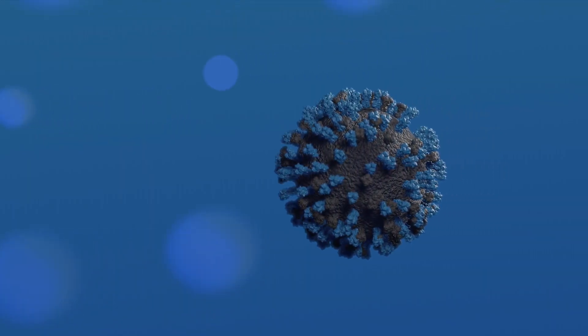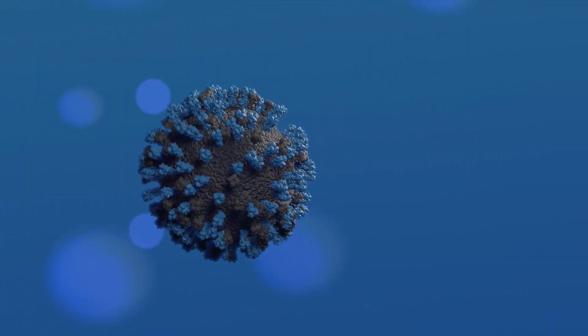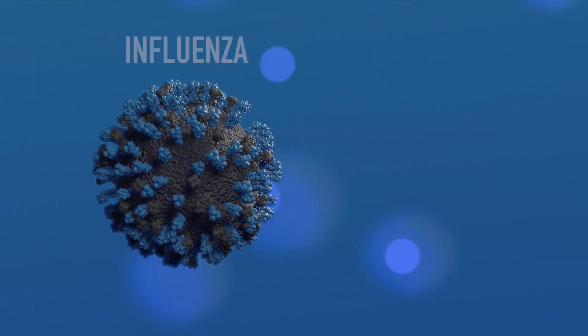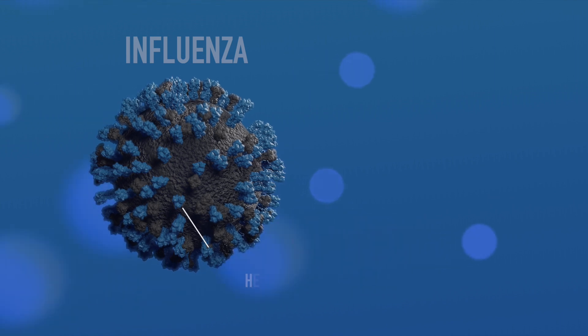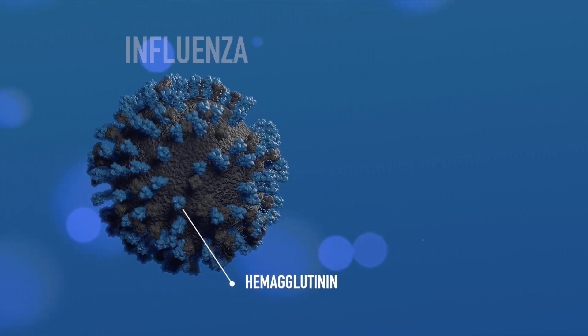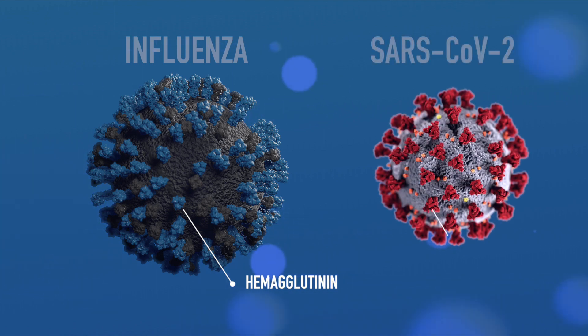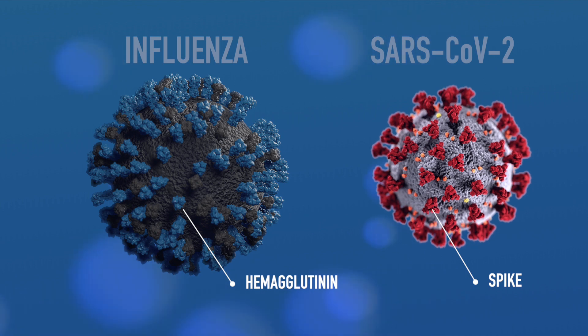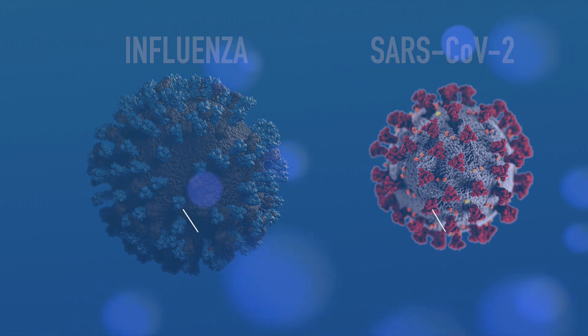Today, I want to start by talking about influenza. In February, we started a brand new challenge to design binders for an influenza protein called hemagglutinin. Hemagglutinin is a protein found on the surface of influenza virus particles. Like the spike protein on the coronavirus, hemagglutinin is responsible for recognizing and binding receptors on human cells.